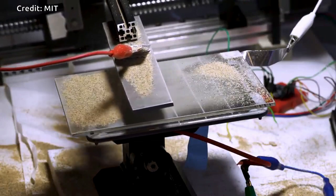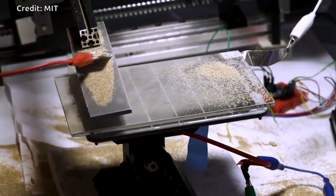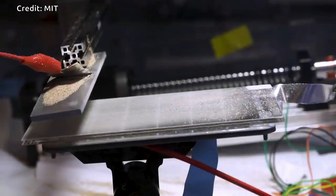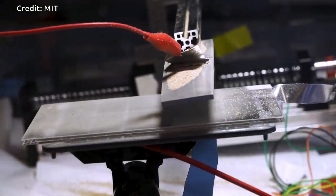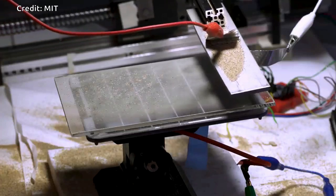The new system uses electrostatic repulsion to cause dust particles to detach and virtually leave off the panel's surface without the need for water or brushes. To activate the system,